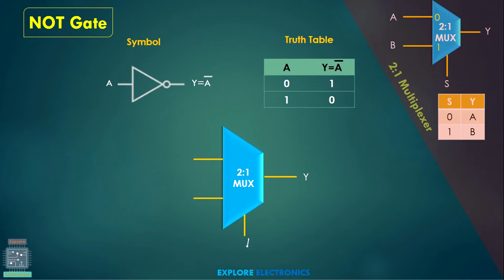So let me treat A as my select line. When A is equal to 0, we know that the first input will be selected, so I am going to pass 1 from here so that output will be 1 when A is equal to 0. When A is equal to 1, this input will be selected, so I need to pass 0 so that I will be getting output as 0. This is how we can implement a NOT gate using a 2-to-1 MUX.